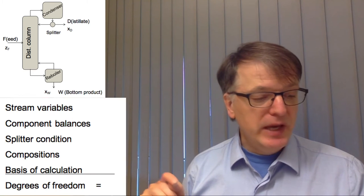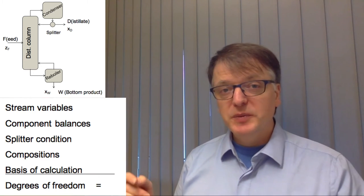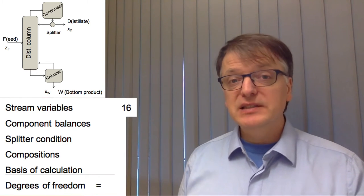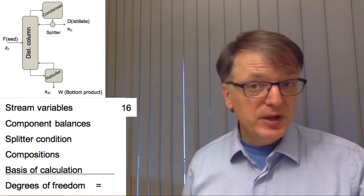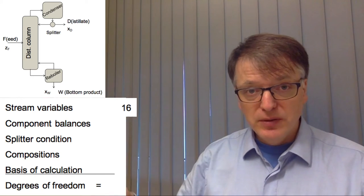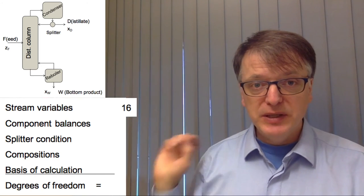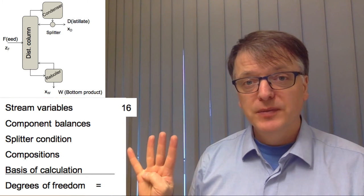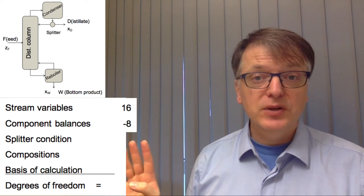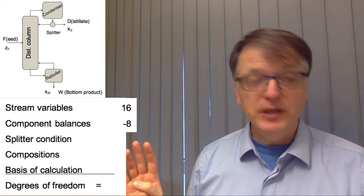But we have a lot more flows now. We have eight different flows, which means that we in total have sixteen different stream variables. Component balances: well, you have the column, you have the condenser, you have the splitter, and you have the reboiler. So you have four subsystems, which means that you can make in total eight component balances.